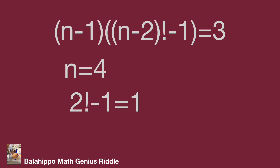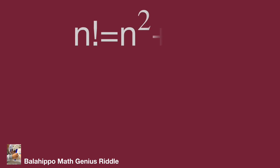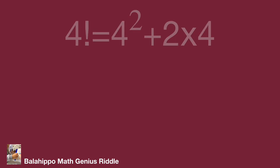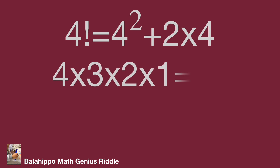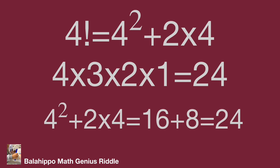While n equals 4, reconfirm to our question: n factorial equals n squared plus 2n. Substituting n equals 4: 4 factorial equals 4 squared plus 2 times 4. 4 factorial equals 4 times 3 times 2 times 1 equals 24. And 4 squared plus 2 times 4 equals 16 plus 8 equals 24. So it is the right answer. Do you get the same result? Hope you enjoy the video. Thank you.